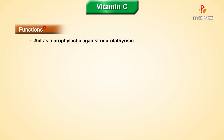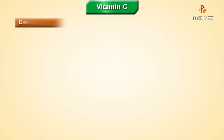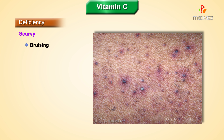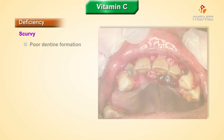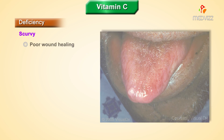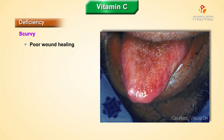Vitamin C acts as a prophylactic agent against neurolathyrism. As for deficiency, scurvy is the clinical manifestation seen in Vitamin C deficiency, characterized by bruising easily, swollen gums, poor perifollicular pin formation, and poor wound healing.